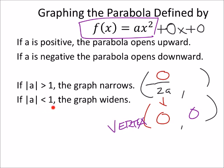If the absolute value of a is less than 1, meaning it's some kind of fraction or decimal value that's less than 1, then it's going to widen because then it's increasing slower, right?